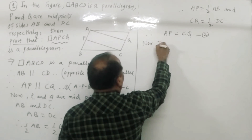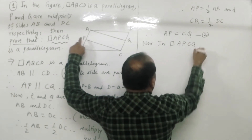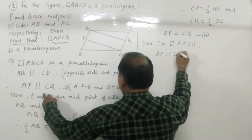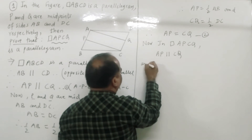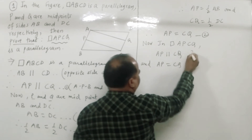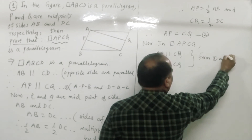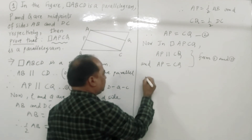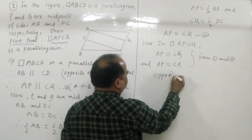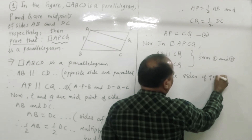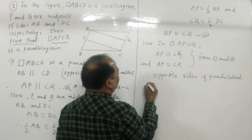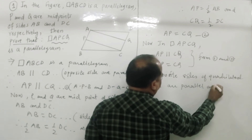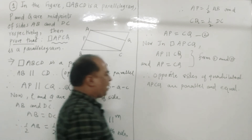Now in quadrilateral APCQ, from statements one and two we get: AP is parallel to CQ and AP is equal to CQ. So opposite sides of quadrilateral APCQ are both parallel and equal.